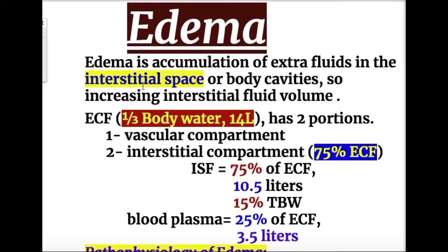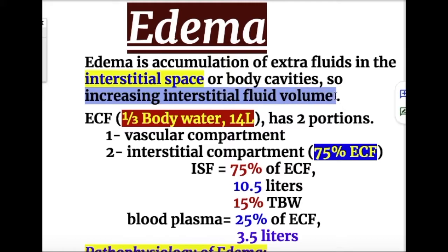Edema is the accumulation of extra fluid in the interstitial space or body cavities, increasing the interstitial fluid volume. The extracellular fluid contains one-third of body water, which is about 14 liters, while two-thirds of body water is intracellular, which is about 28 liters.